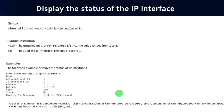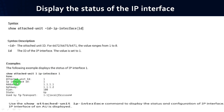If you want to get the status of the IP interface, follow the syntax: show attached-unit <id> ip-interface. The id is the attached unit id with values ranging from 1 to 8, and the IP interface id value is set to 1. Example: show attached-unit 1 ip-interface 1. It provides complete details: id is 1, address is 1.1.1.1, gateway is 1.1.1.2, VLAN id is 100, and state is up.